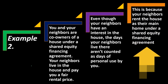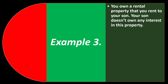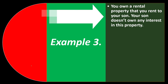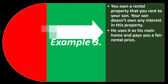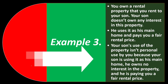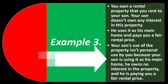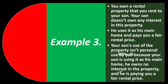Example 2: you and your neighbor are co-owners of a house under a shared equity financing arrangement. Your neighbors live in the house and pay you a fair rental price. Even though your neighbors have an interest in the house, the days your neighbors live there aren't counted as days of personal use by you, because your neighbors rent the house as their main home under a shared equity financing arrangement.